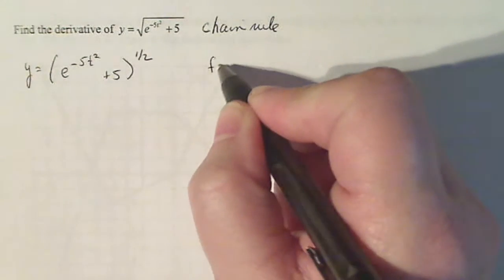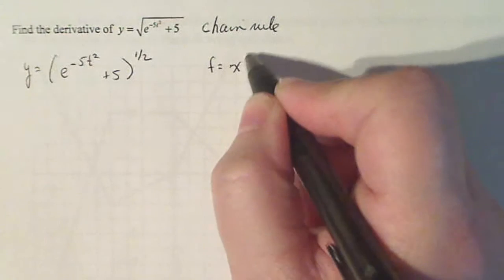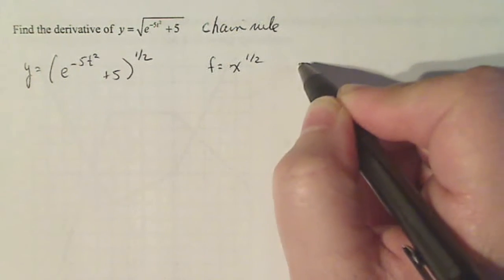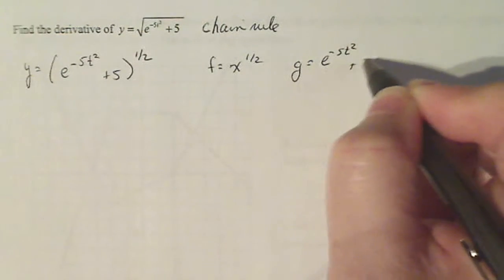So what I've shown my students is I call f the outside function. So in this case, it's going to be x to the one half and g is the inside function, which is e to the minus five t squared plus five.